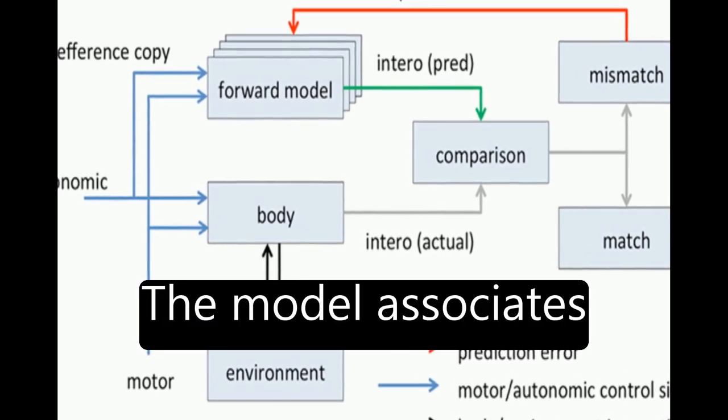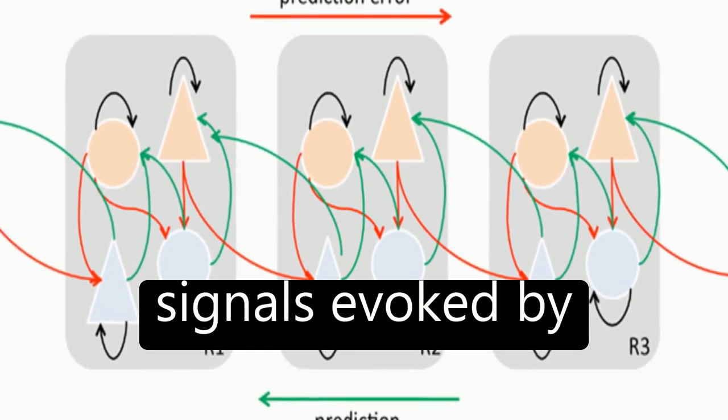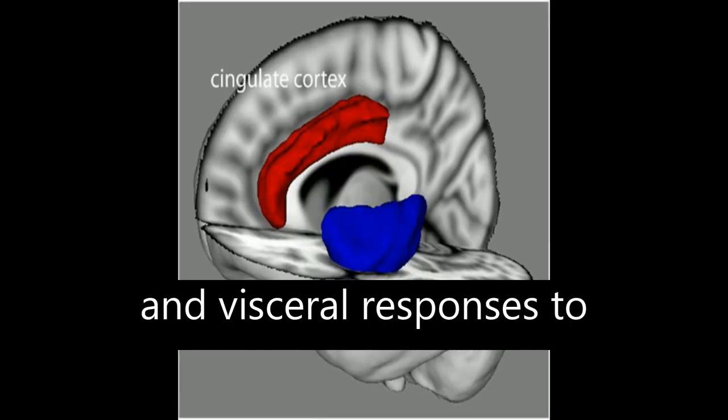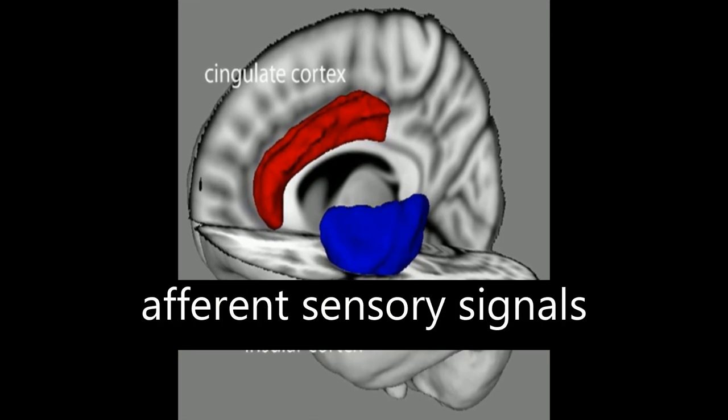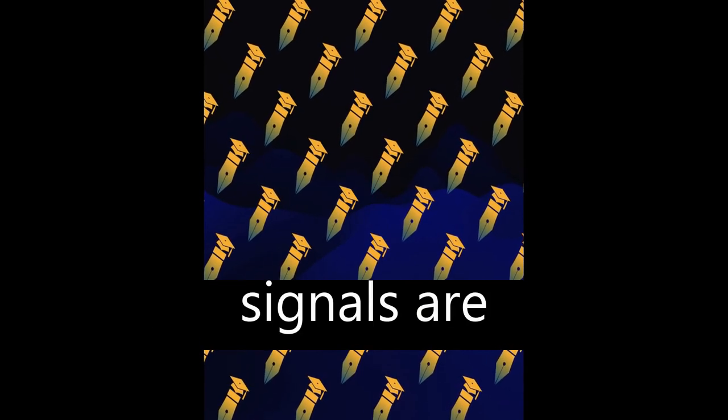The model associates presence with successful top-down predictions of informative interoceptive signals evoked by autonomic control signals and visceral responses to afferent sensory signals, connects presence to agency by allowing predicted interoceptive signals to depend on whether afferent sensory signals are self-generated or externally caused.